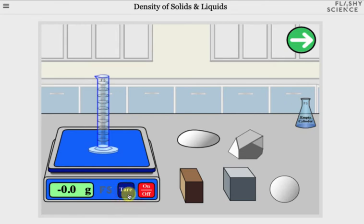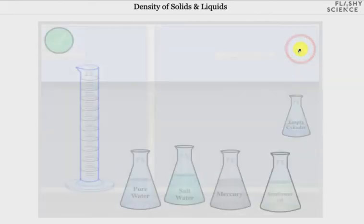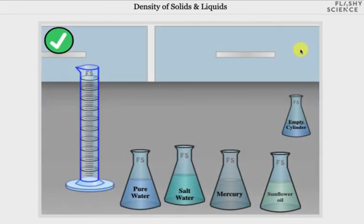You'll see the measuring cylinder again and a selection of 4 liquids: pure water, salt water, mercury, and sunflower oil, which some of you might use for cooking. There is also a waste liquids flask for emptying the measuring cylinder.